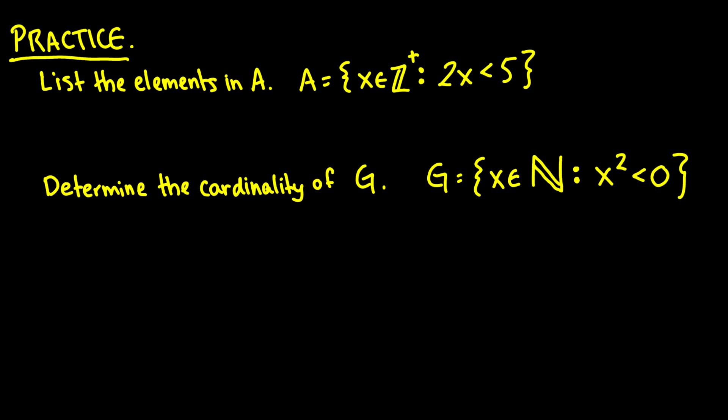Let's list the elements of A when we say x is in the positive integers, so of course this is positive integers in case you have forgotten what this is, where 2 times x is less than 5.